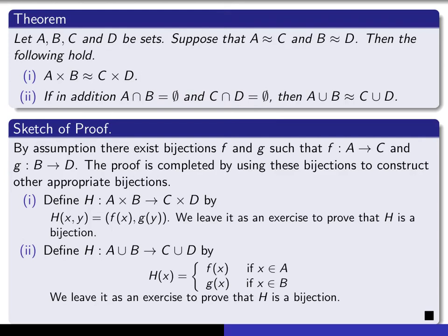For surjectivity, that's a little bit simpler. You give yourself an element Y in the codomain, and you have to produce an X in the domain which maps to it. Well, if the Y is in the codomain, then either it's in C or in D. If it happens to be in C, then we can use the surjectivity of F to produce something in A that F maps to that element.